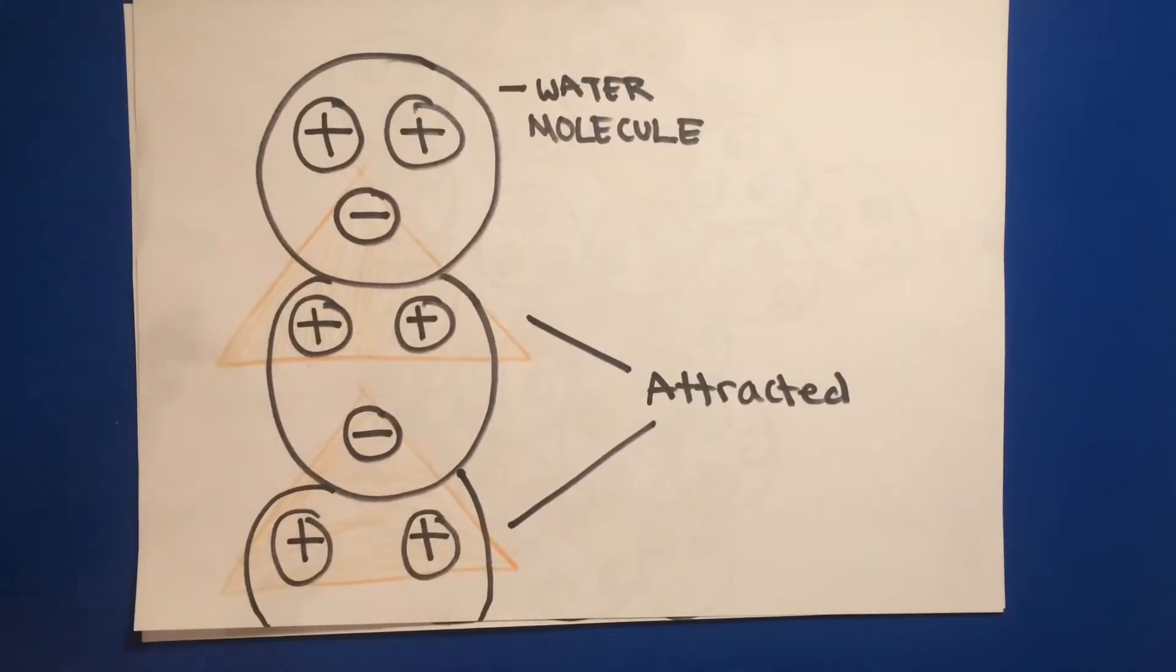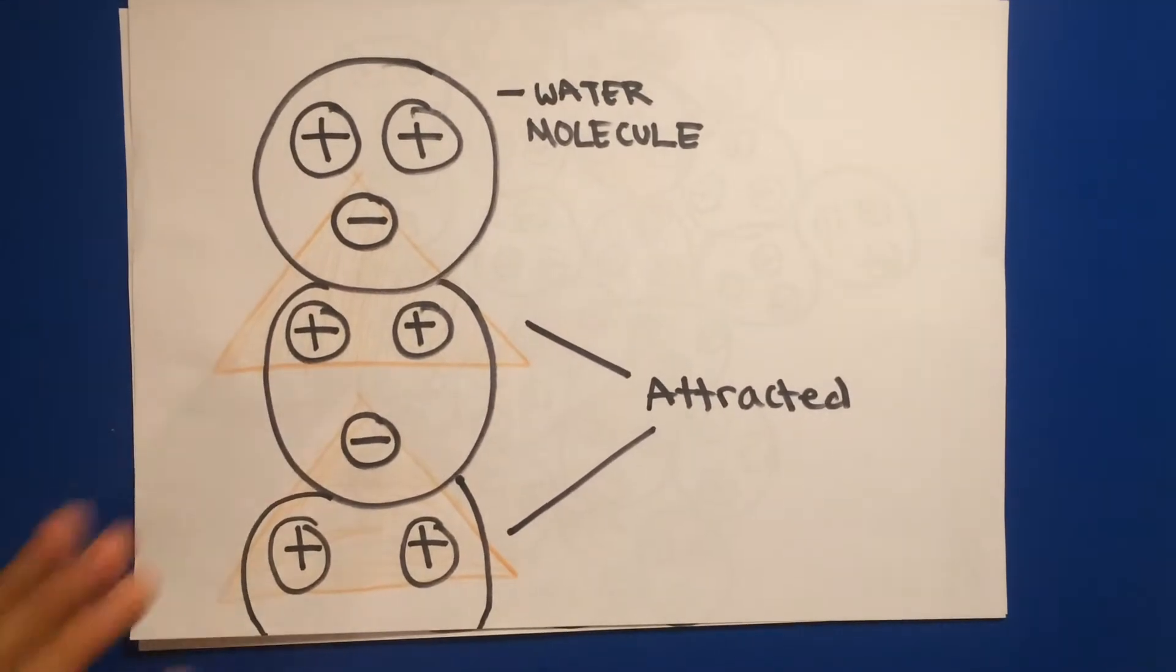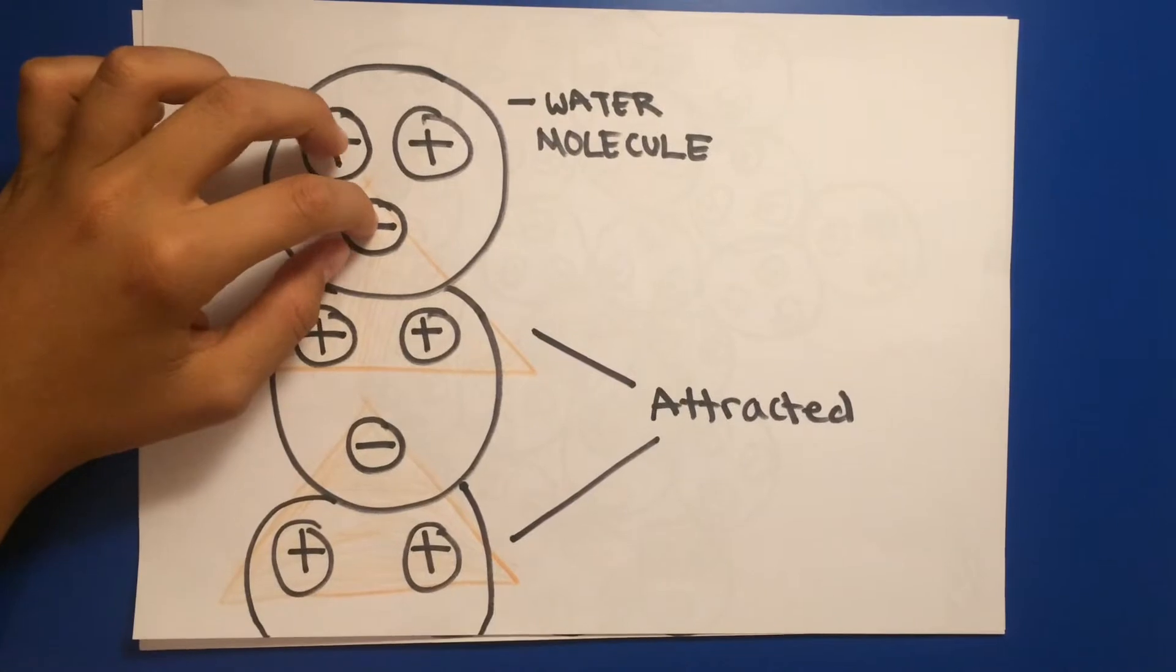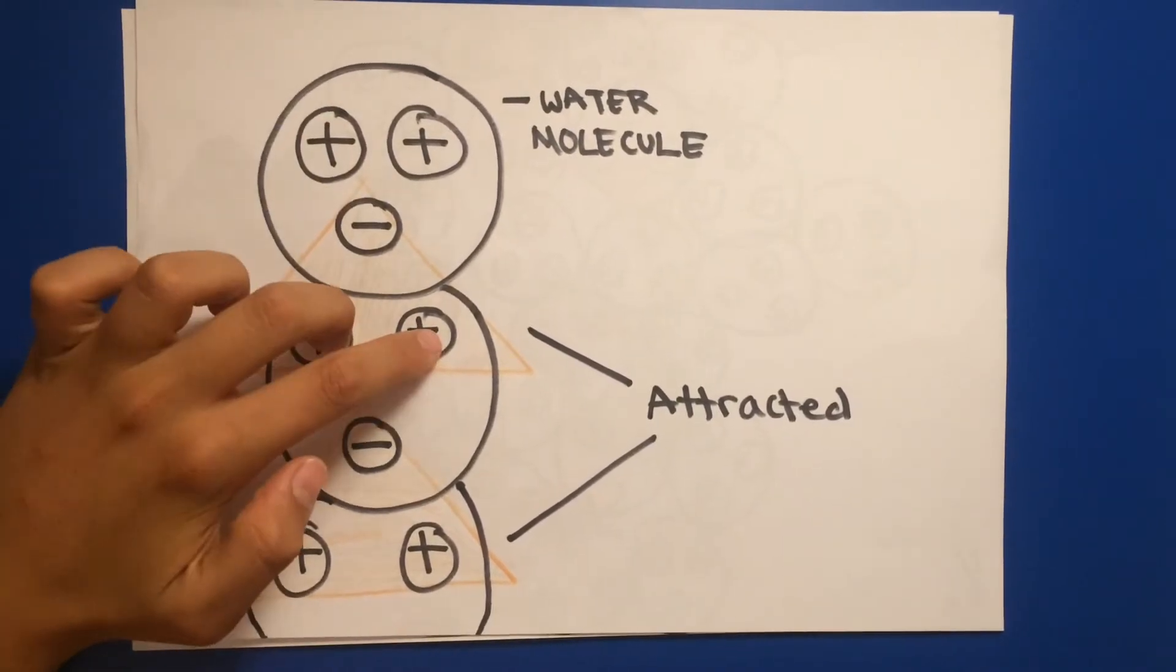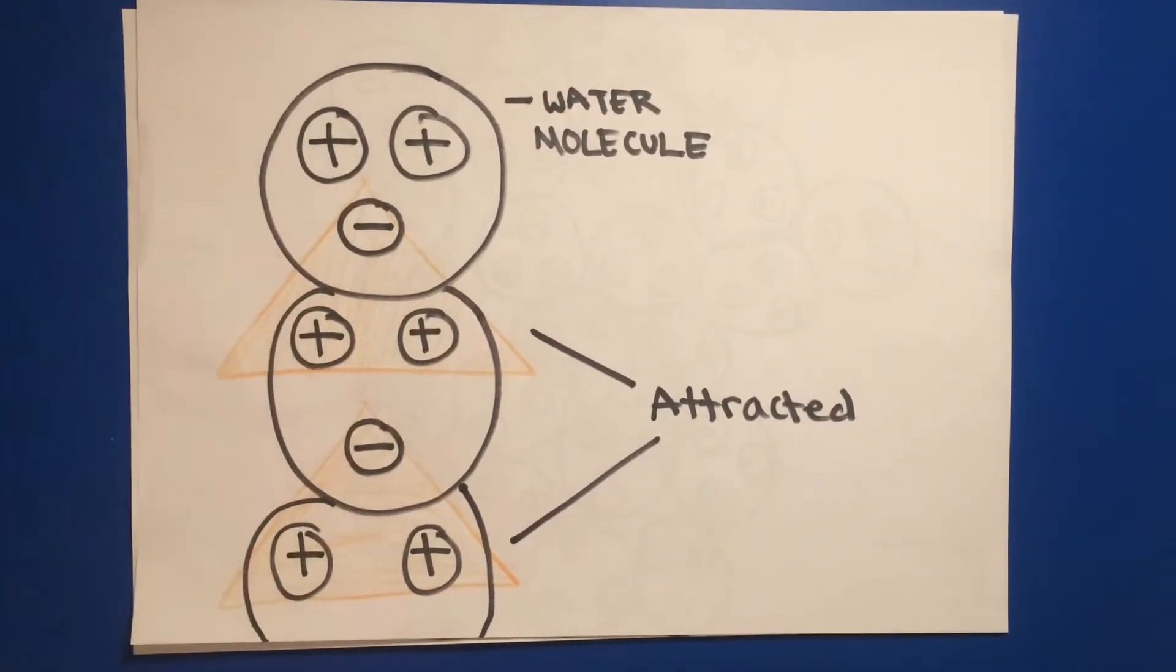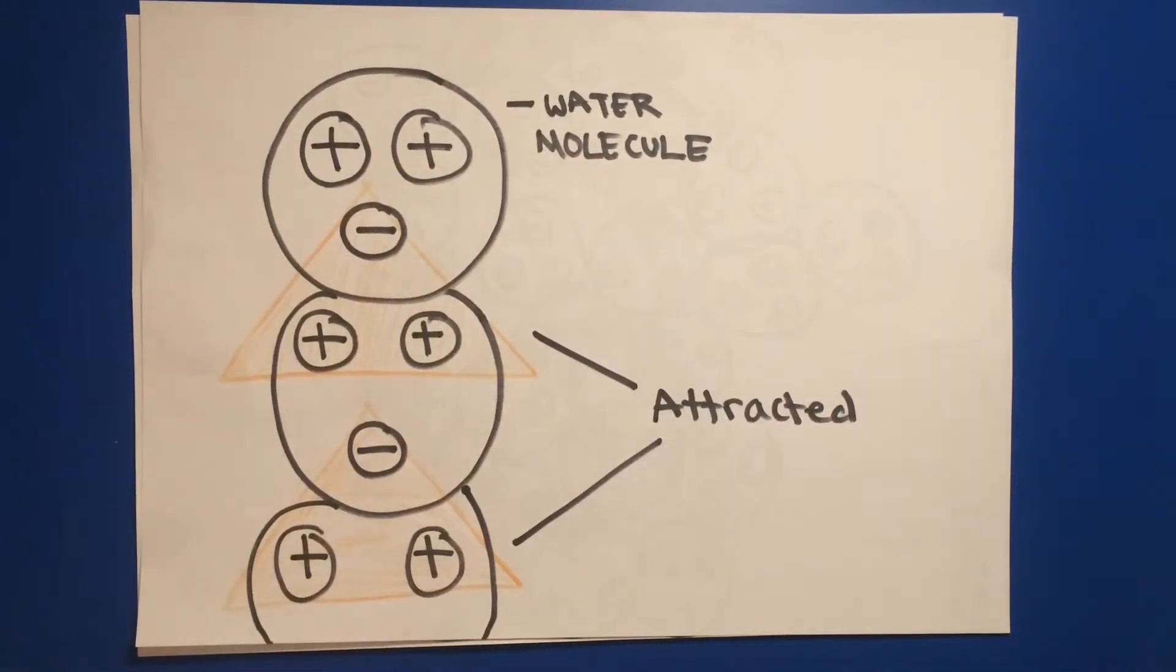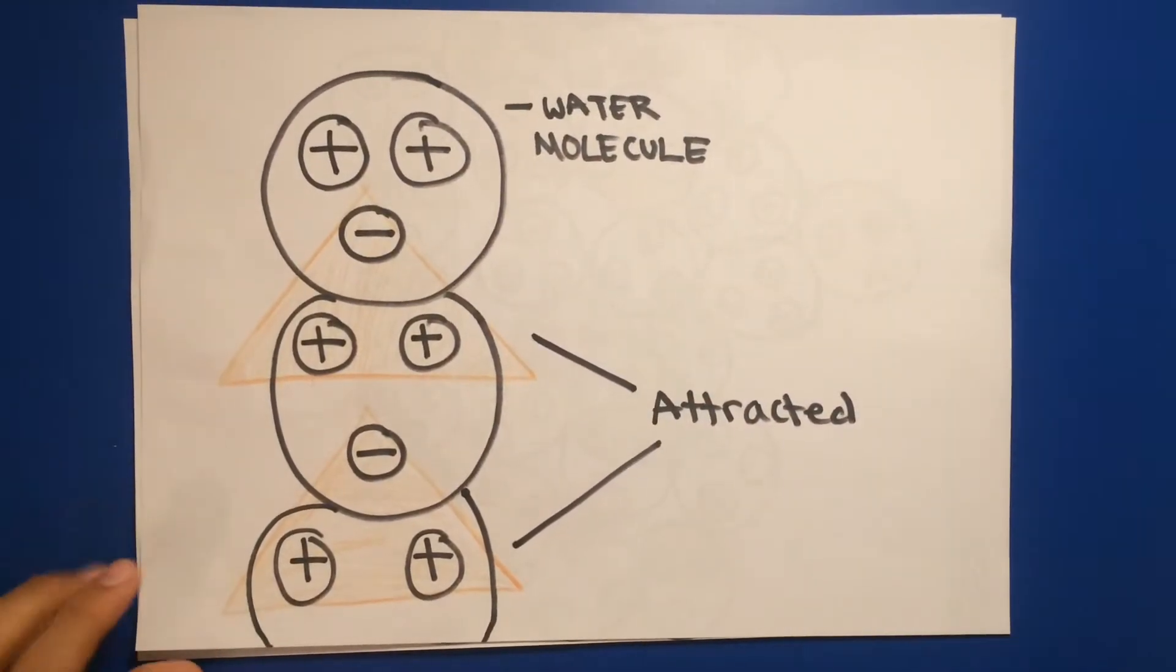Now imagine there is a thousand water molecules. The same thing would happen, negative sides of one water molecule meeting other positive sides, and vice versa. So this creates a chain and eventually gets to a drop of water.